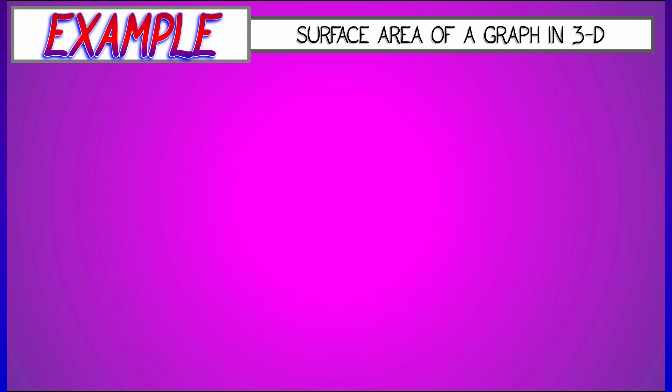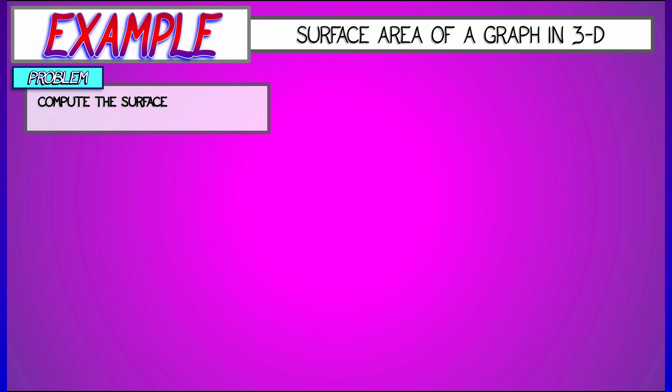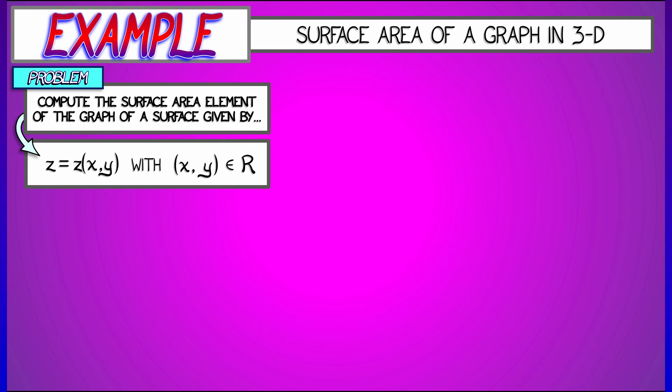Let's look at an example where we compute the surface area of a graph. Let's say that we have a graph that is given in terms of the equation z is a function of x and y. So x and y live in some region in the xy plane, and then I have this graph in the z variable.